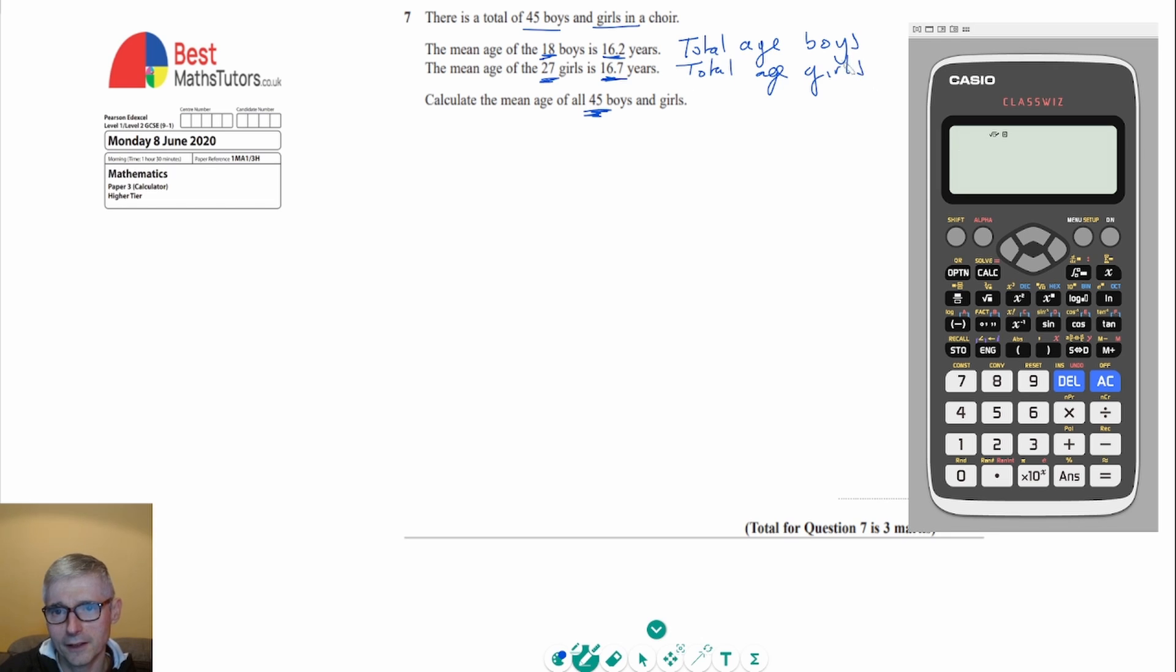And then once we've got those two numbers, we can then find the overall total, so overall total or total age.